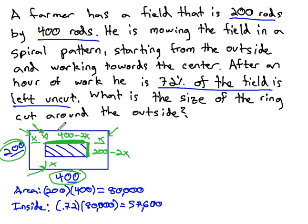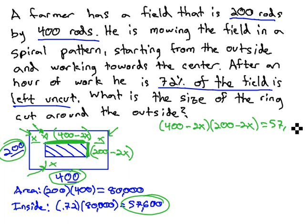And now we can make an equation multiplying the length times the width equals the area. 400 minus 2x times 200 minus 2x is going to equal that area we found of 57,600.